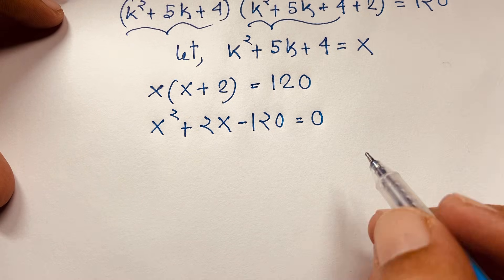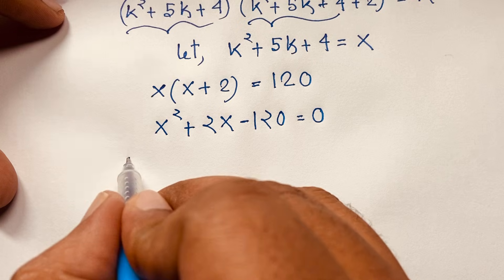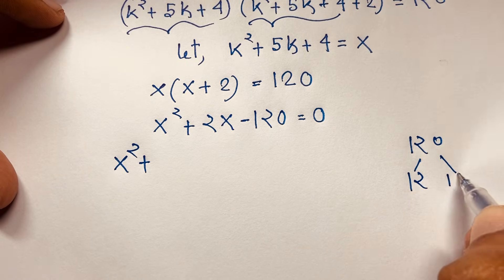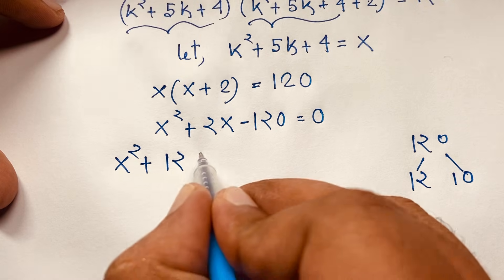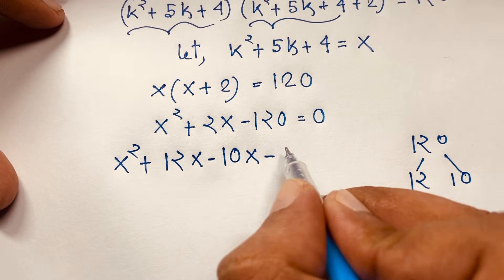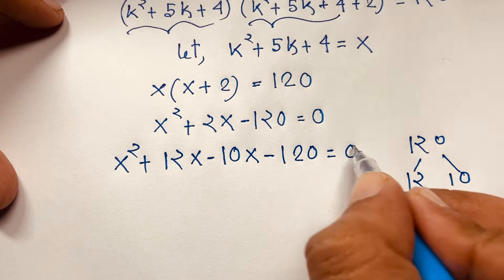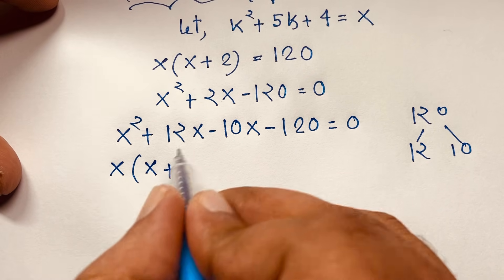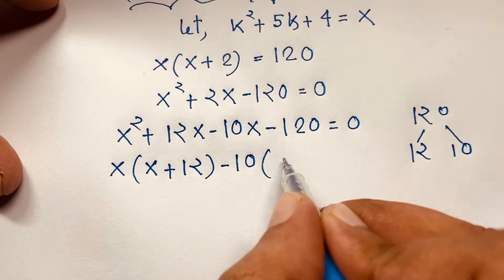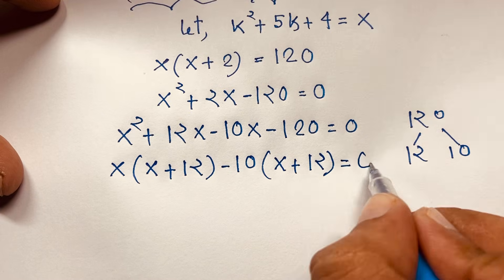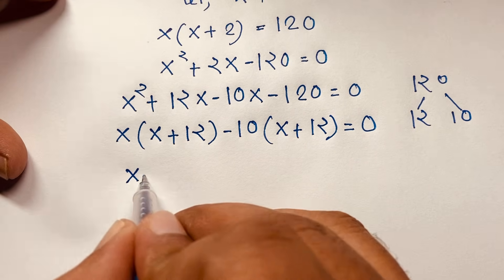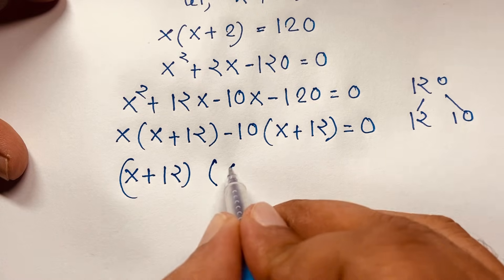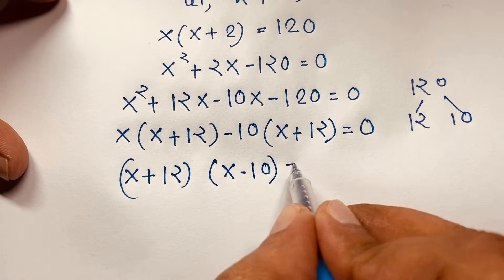Now I factor this quadratic using the middle-term method. We need two numbers that multiply to 120 and differ by 2: that's 12 and 10. So we write x² + 12x - 10x - 120 = 0. Taking x common gives x(x + 12), and taking -10 common gives -10(x + 12) = 0. Then (x + 12) is common, so we get (x - 10)(x + 12) = 0.